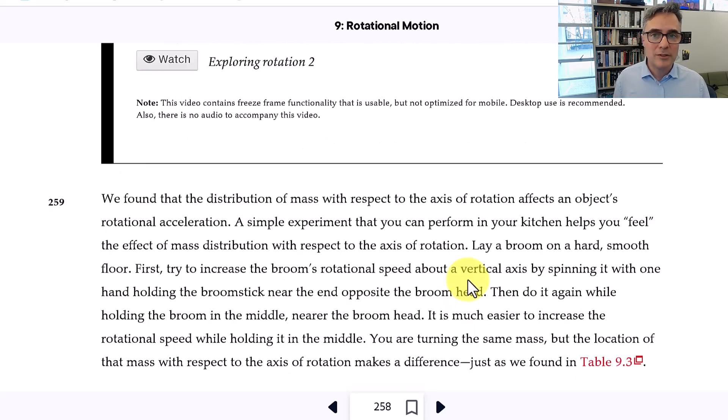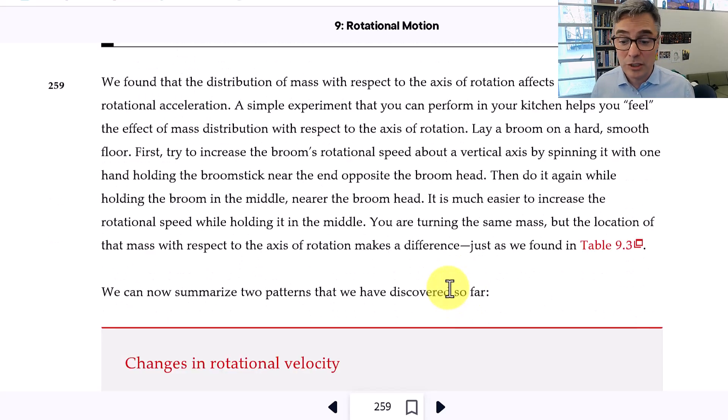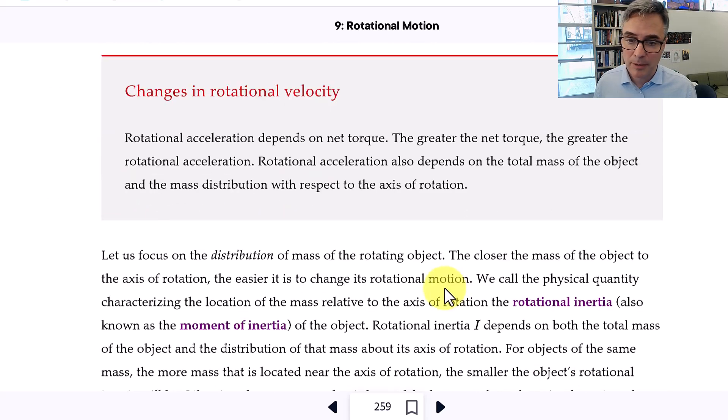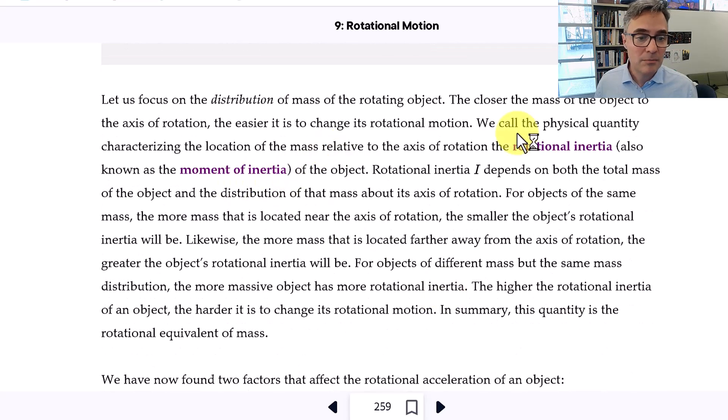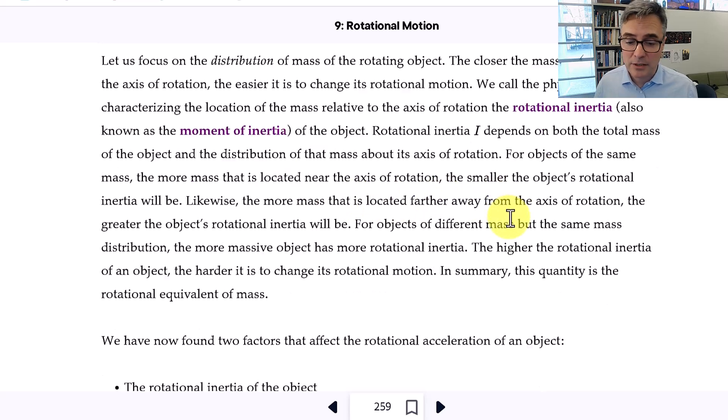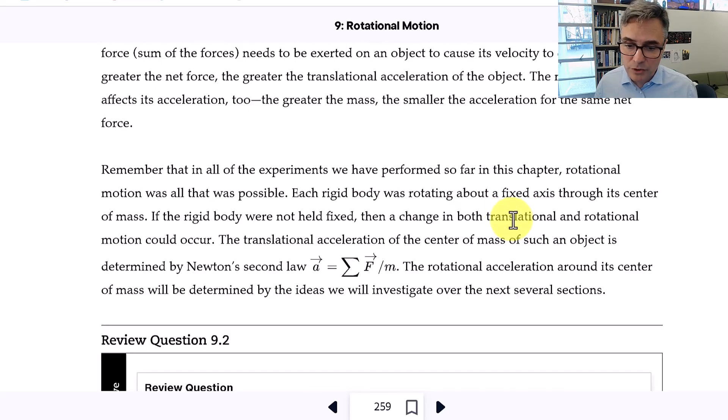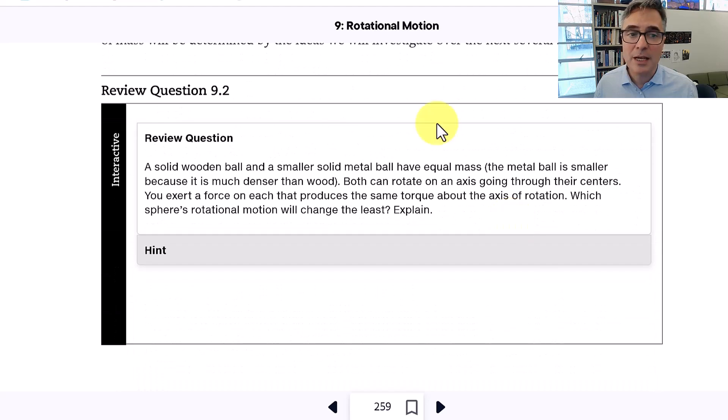So the idea is that the rotational acceleration doesn't just depend on the net torque, but it also depends on the mass and the distribution of the mass. So this is going to get into rotational inertia, which is going to come up in the next section, sometimes known as the moment of inertia of an object. So rotational inertia I depends both on the total mass of the object and the distribution of that mass about the axis of rotation.